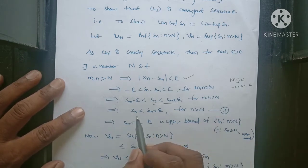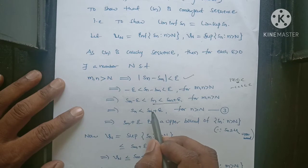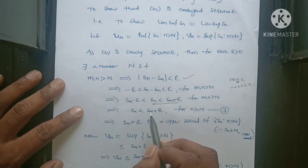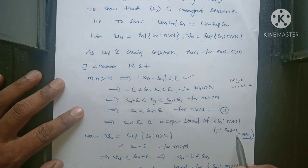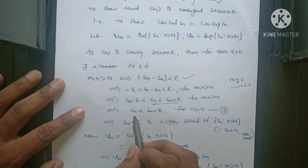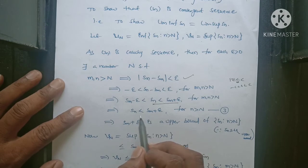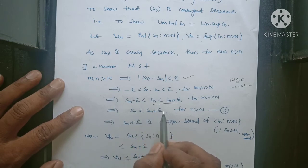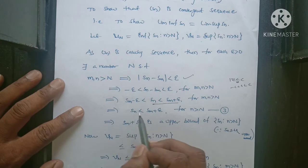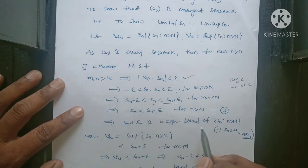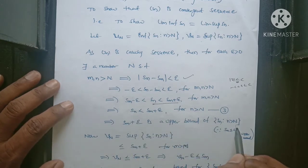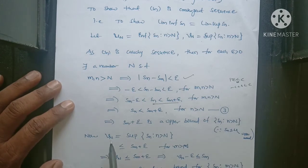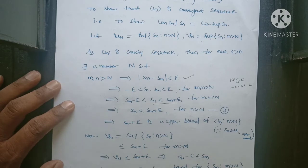Observe here: Sn is less than the number Sm plus epsilon. Since Sn is less than or equal to U, that number U is called the upper bound of the sequence Sn. So Sm plus epsilon is an upper bound of the sequence Sn for n greater than capital N. Now, Vn — the supremum of Sn for n greater than capital N.